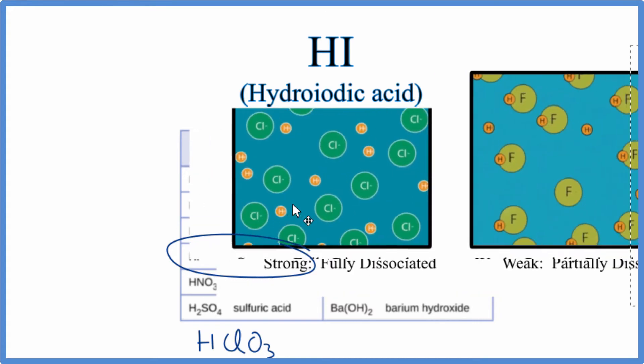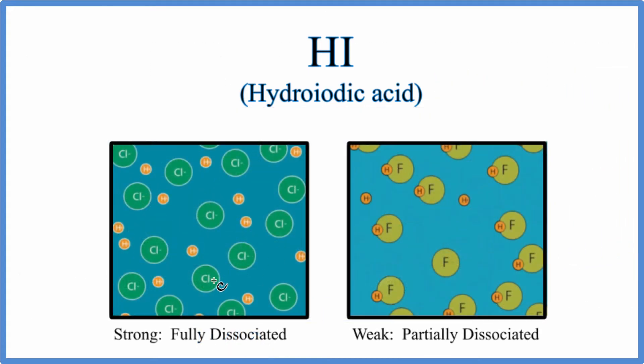When we say it's a strong acid what we mean is that it's fully dissociated in water. It's broken apart completely. So for HI we have all the hydrogen ions there by themselves. They've dissociated in the chlorine. It would actually be I-, the iodide ion. All of those would be by themselves. That's fully dissociated.